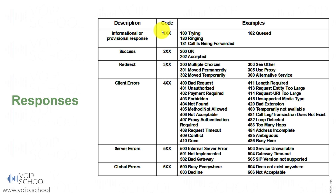The first type is provisional. The most important message here is the 100 Trying. It is responsible for stopping retransmissions. The server says it is handling your request — please stop retransmitting while it processes your call.